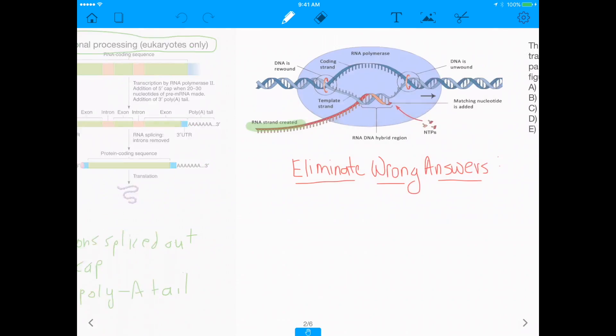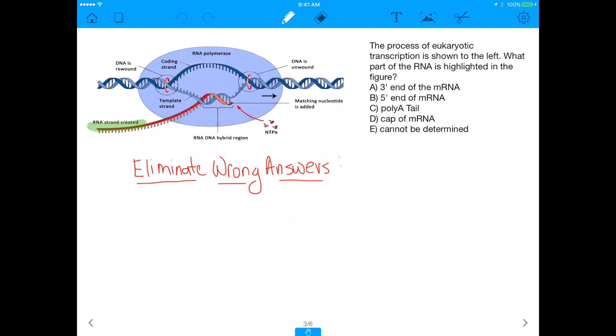So with that, if we go back to the question, we can eliminate some wrong answers, because we initially want to know what this part is, right? This part that's highlighted, we want to know what that is. But right now, we can see that the process of eukaryotic transcription is shown to the left, not the process of eukaryotic post-transcriptional modification. And because it's transcription, this part cannot be...